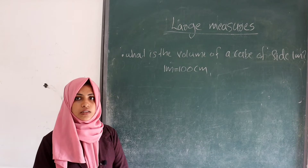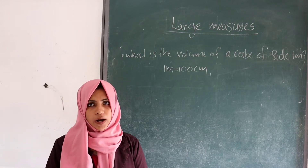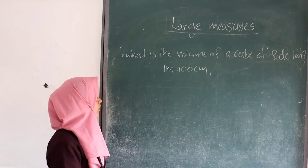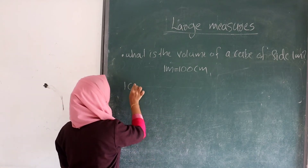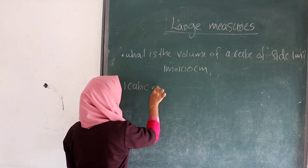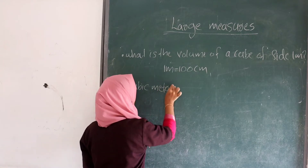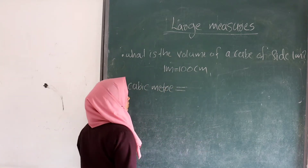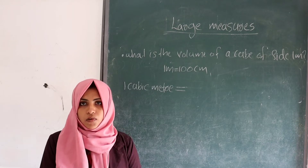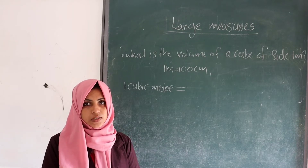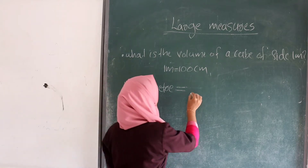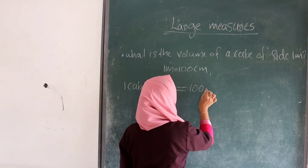The volume of a cube of 1 meter is 1 cubic meter. So, 1 cubic meter is equal to 10 lakh cubic centimeters.